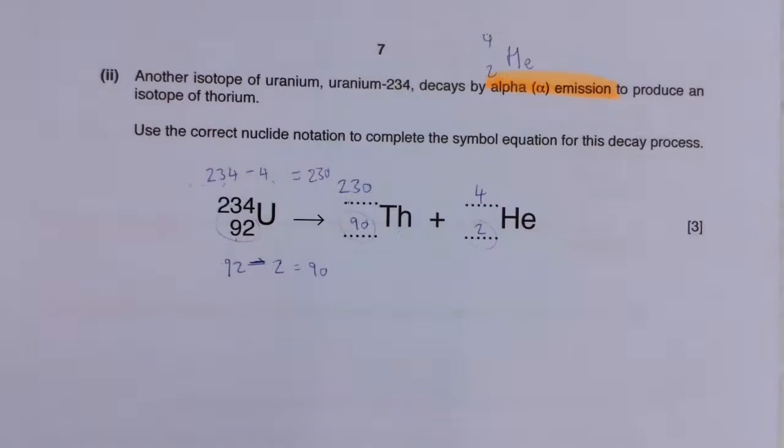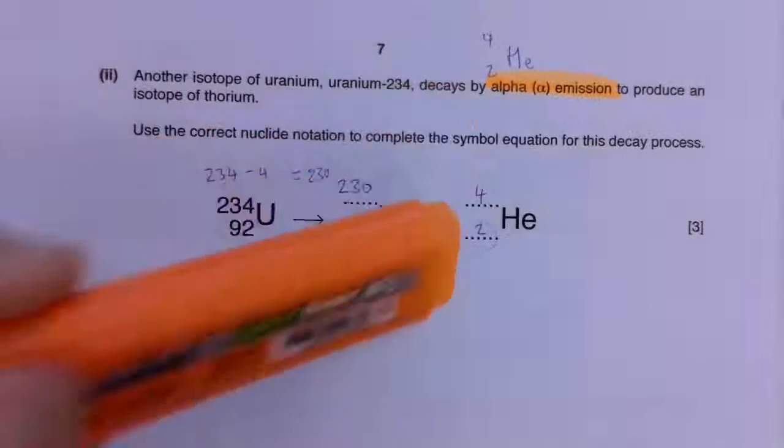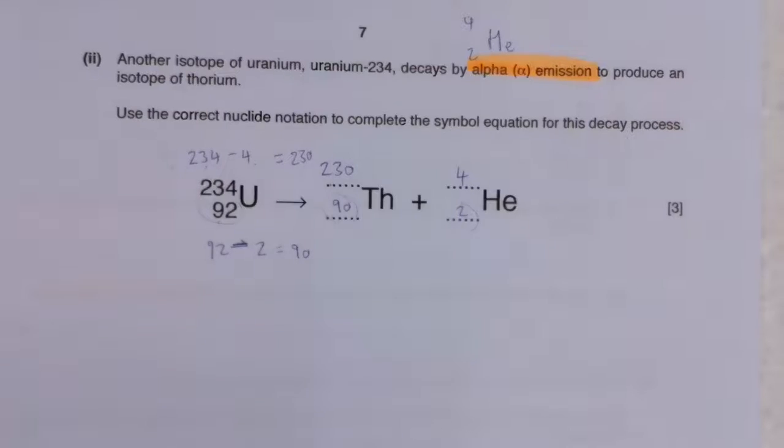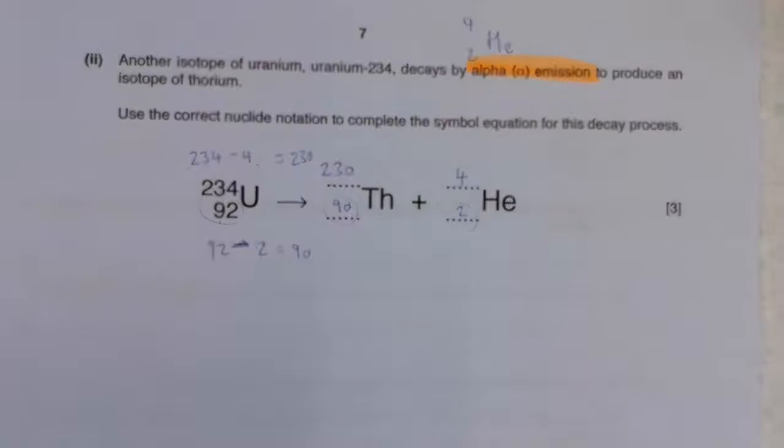Balancing our equation. Really nice three marks for that one. There was a mark there, I think, for the 230, the 90, and then the 4 and the 2 together. Let's get practicing those balancing equations, and hoping that an alpha one comes up, because it's come up very, very regularly.